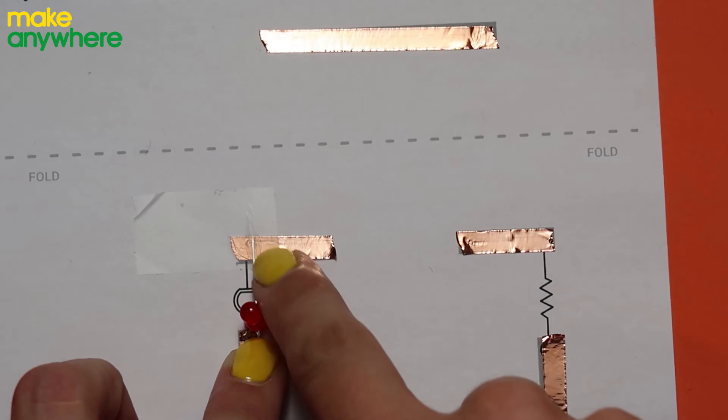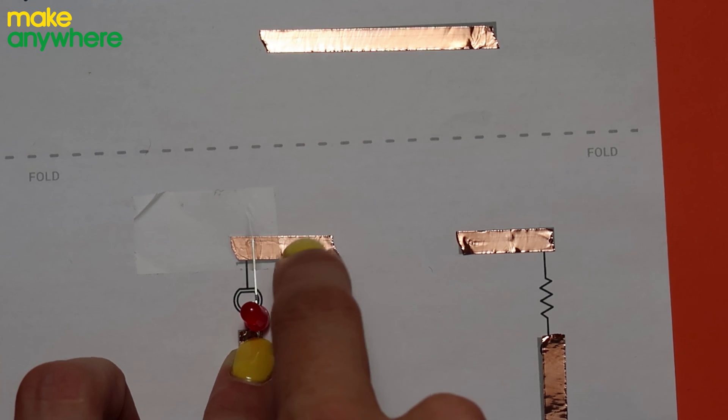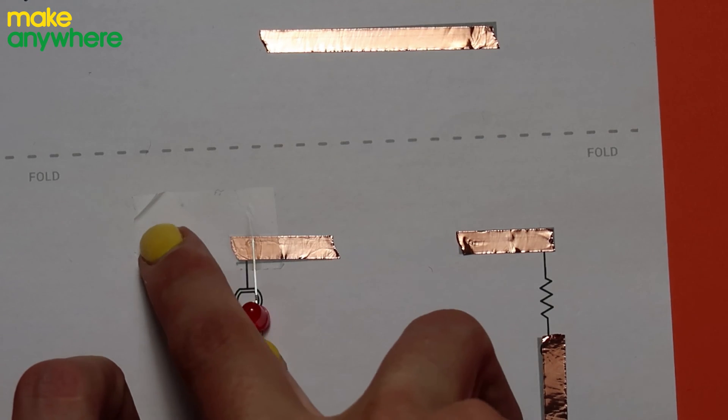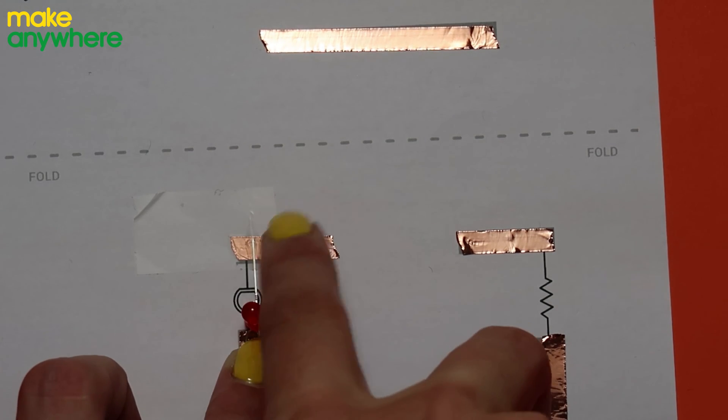When you put your tape over make sure that there is still some of the shiny showing because we'll need that to touch this side here for our switch to work. Make sure you don't put your tape all the way over.